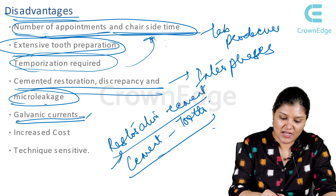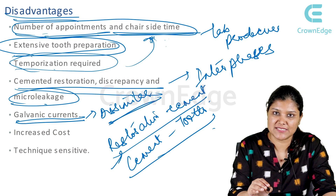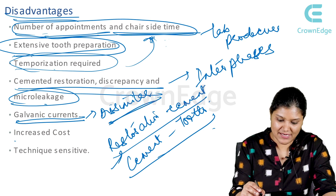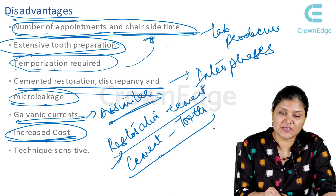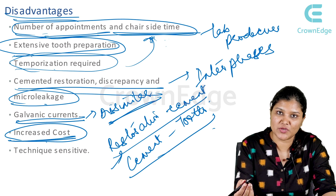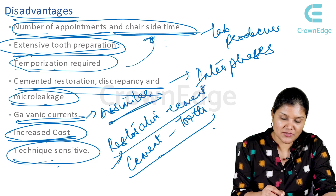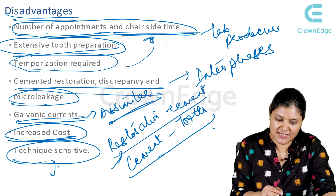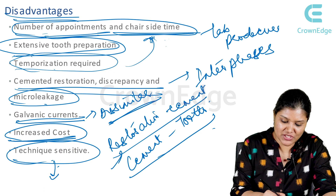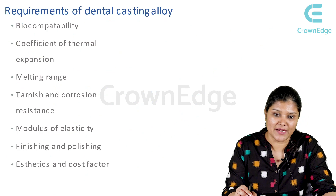Galvanic currents: if there are dissimilar metals in the mouth, like an amalgam restoration, it can form an electrolytic cell and cause galvanic currents. Increased cost due to the lab procedure involved. Technique sensitive: since you want very good control of contacts and contours, your preparation has to be impeccable because you will have to give good bevels and flares.